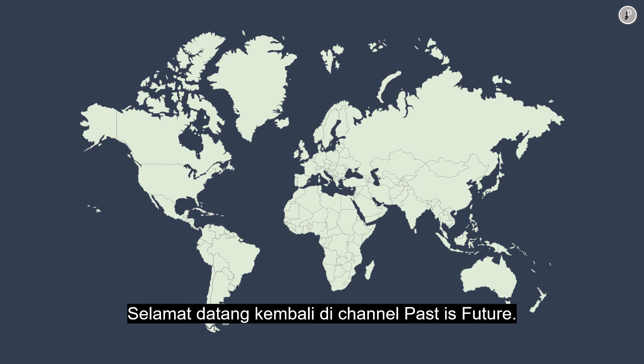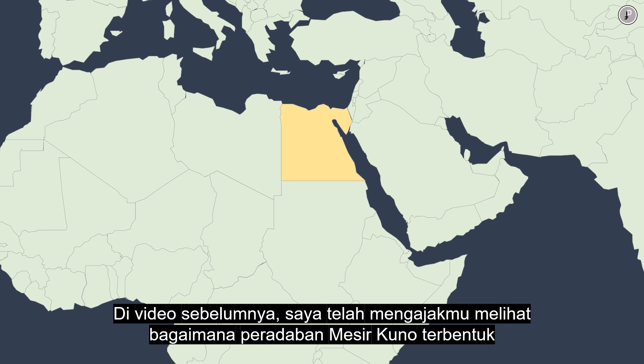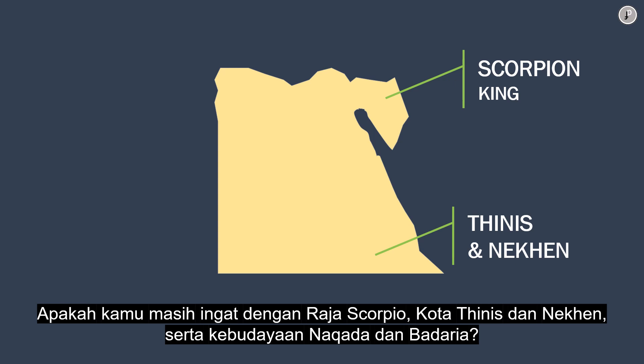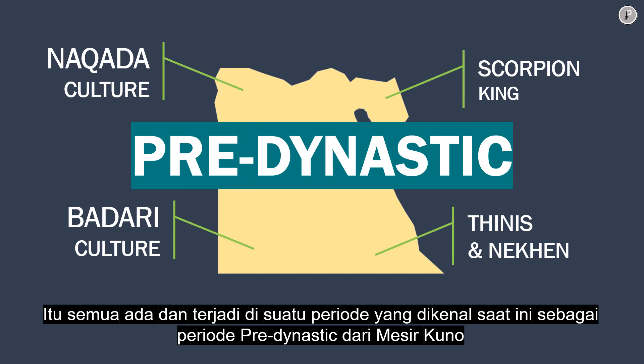Welcome back to Past is Future channel. In the previous video, I shared how ancient Egypt civilization was formed. Do you still remember the Scorpion King, the city of Nis and Neken, and also the culture of Neketa and Badari? It existed and occurred in a period known as the pre-dynastic period of ancient Egypt. Some historians also named it Dynasty Zero.